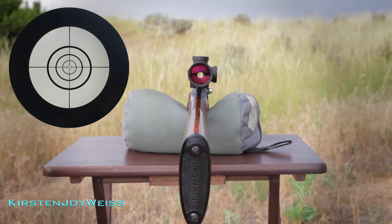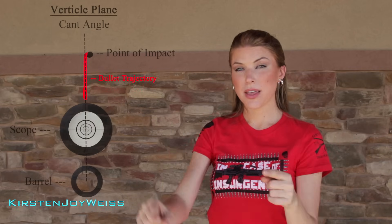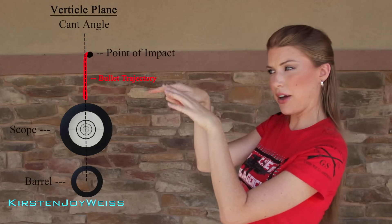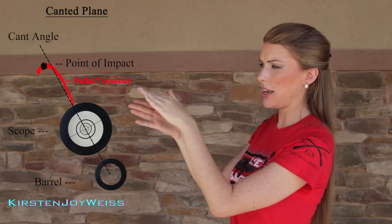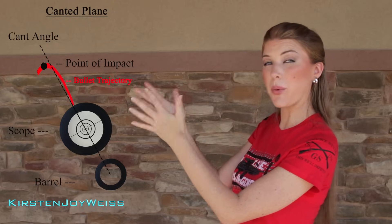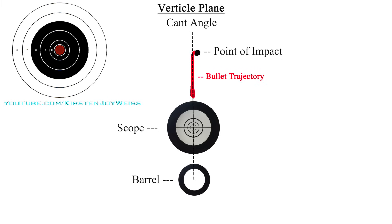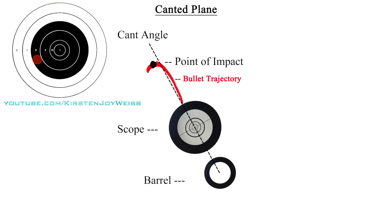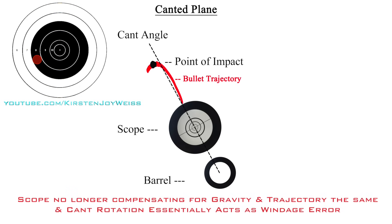If you start tilting your gun to the right, your bullet is actually going to go low and to the right. If you tilt your gun to the left, it's going to go low and to the left. Why is this? Because instead of going straight up, you're tilting on a pivot point basically. When you lob that trajectory, the scope is no longer compensating for that trajectory completely.